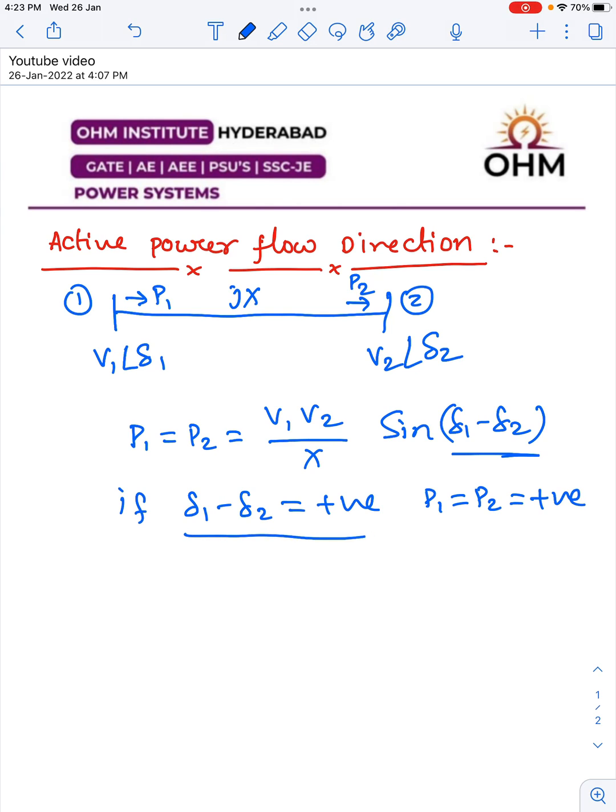When δ1 - δ2 is positive, delta 1 must be greater than delta 2. If δ1 > δ2, then δ1 - δ2 is positive, and P1 and P2 are positive. This confirms our assumed direction is correct and the active power flows from bus 1 to bus 2.